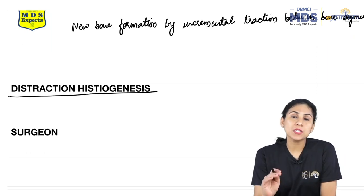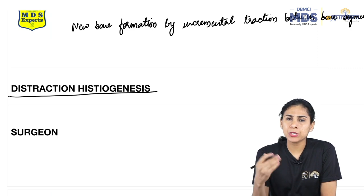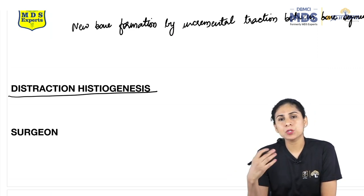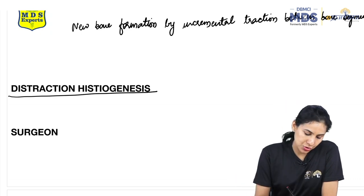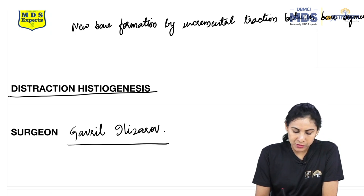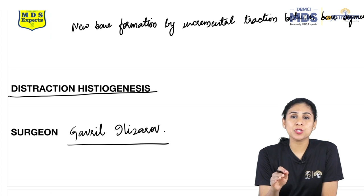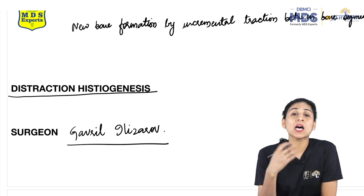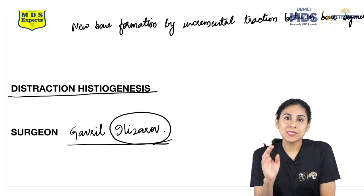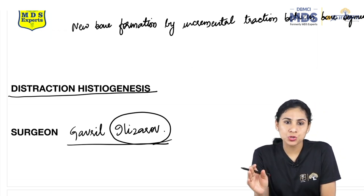A commonly asked exam question is: who was the first to describe distraction osteogenesis? It was Dr. Gavril Elizarov. Most of the principles of distraction osteogenesis are named Elizarov's principles.